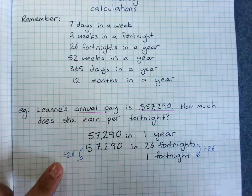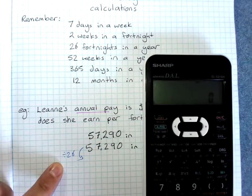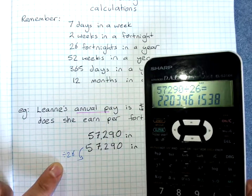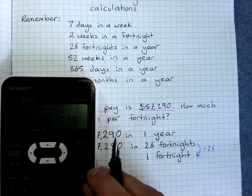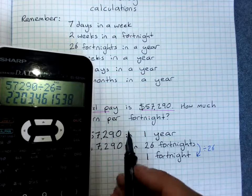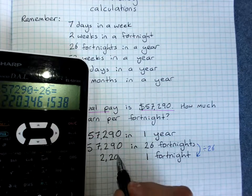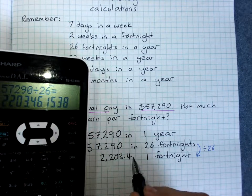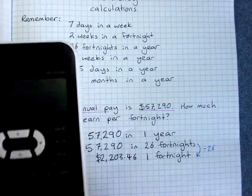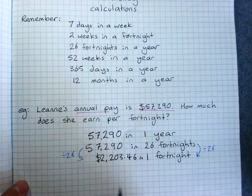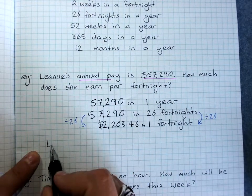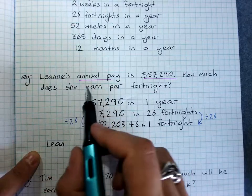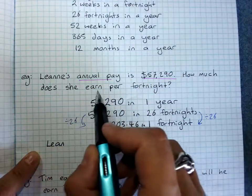So all you do is grab your calculator: 57,290 divided by 26, and she gets $2,203.46. Don't forget the dollar sign. Because it's a word question, if we're being really thorough, we write a word answer. We answer the question: how much does she earn per fortnight?